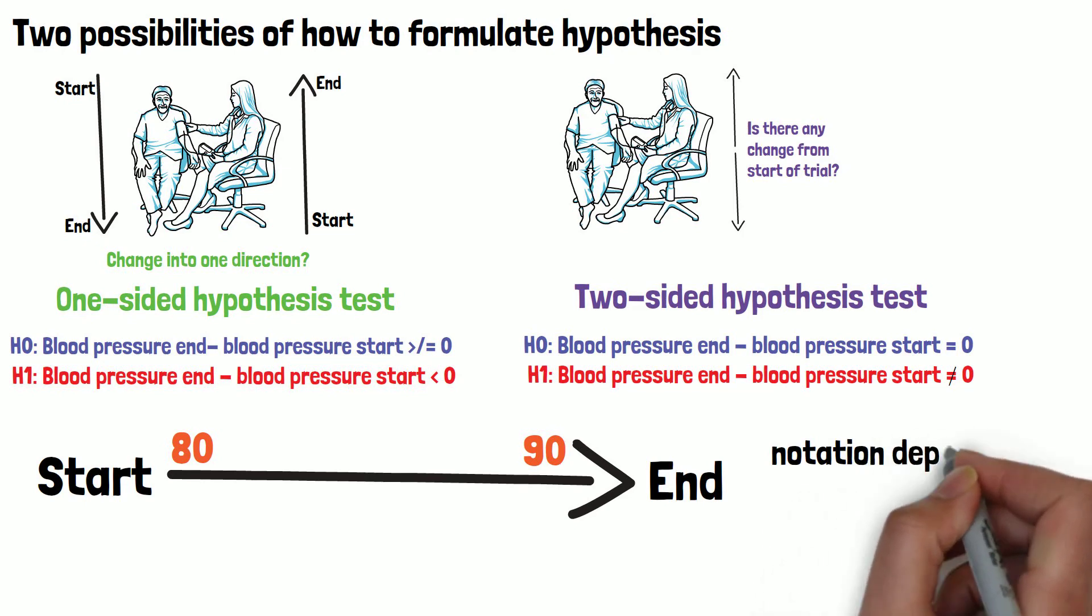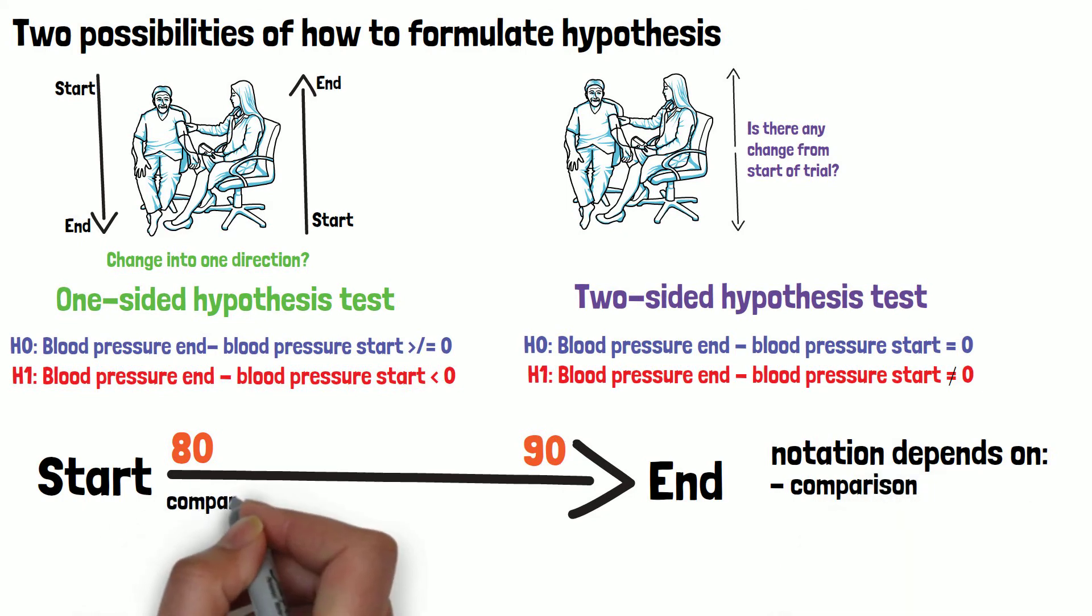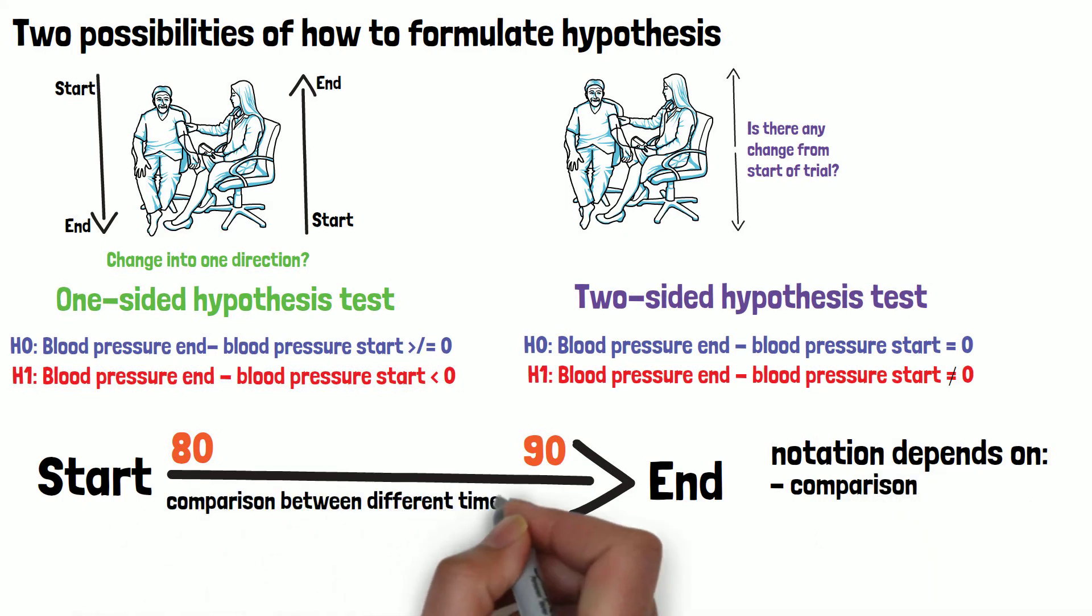There are different ways to do the notation depending on what you compare. For example, if you have only one treatment like in this example where you compare between different time points or if you have a control group to compare with. Therefore, the number of treatment arms also plays a role here.